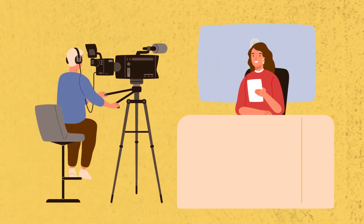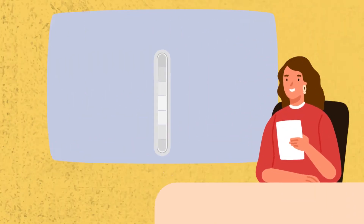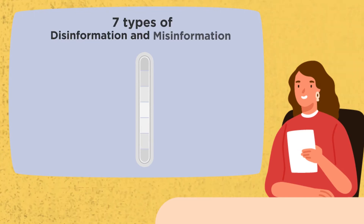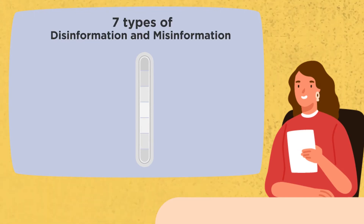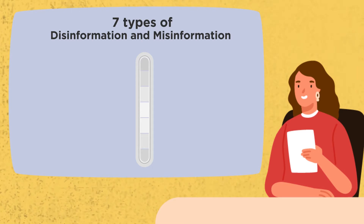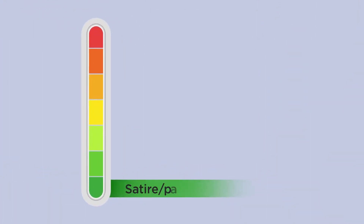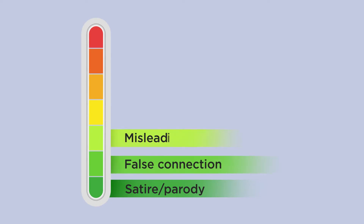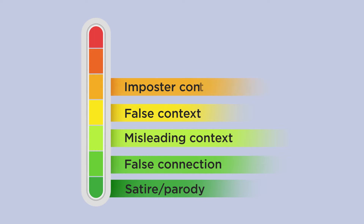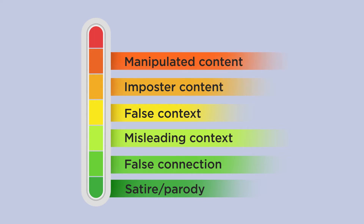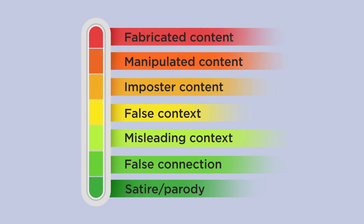Claire Wardle of First News currently classifies seven distinct types of dis and misinformation. Arranged on a scale from the least to most harmful, this list includes satire or parody, false connection, misleading context, false context, imposter content, manipulated content, and fabricated content.